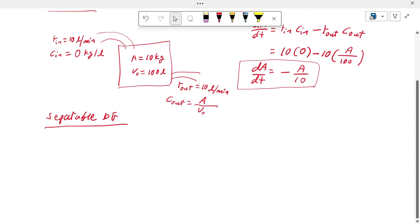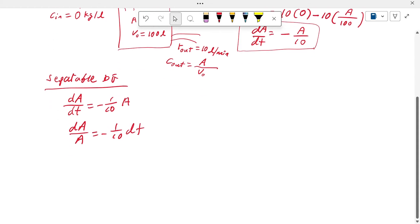Here we have dA/dt equal to -1/10 times A. We can separate this. We bring the A variable on the left, and then we have 1/10 dt. And then we're going to integrate both sides.